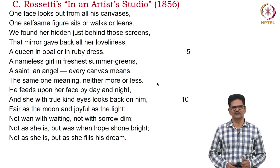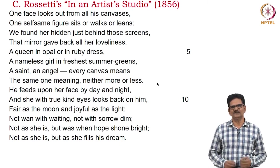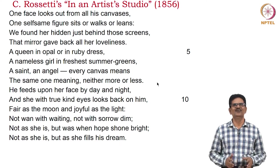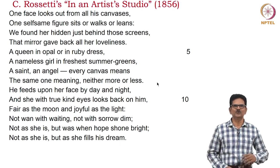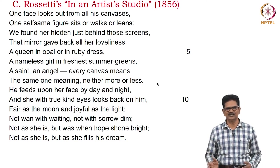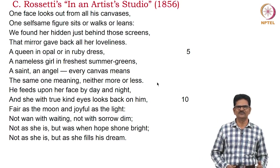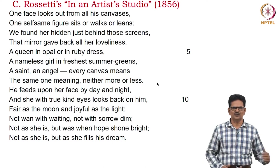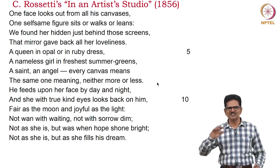We have an example from Christina Rossetti's poem In an Artist's Studio, published in 1856. This is a sonnet. Rossetti herself was a model for her own brother for painting. Here we have a description of what happens in a studio: 'One face looks out from all his canvases, one selfsame figure sits or walks or leans. We found her hidden just behind those screens. That mirror gave back all her loveliness, a queen in opal or in ruby dress, a nameless girl in freshest summer greens, a saint, an angel — every canvas means the same one meaning, neither more nor less. He feeds upon her face by day and night, and she with true kind eyes looks back on him, fair as the moon and joyful as the light, not wan with waiting, not with sorrow dim, not as she is, but was when hope shone bright, not as she is, but as she fills his dream.'